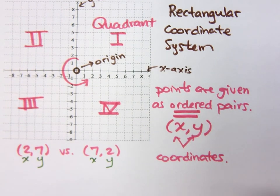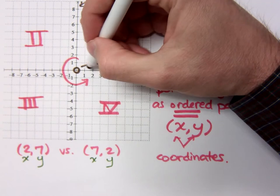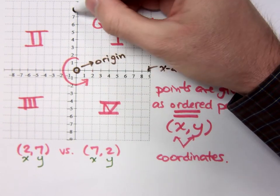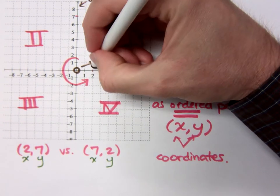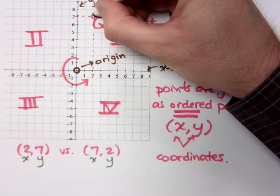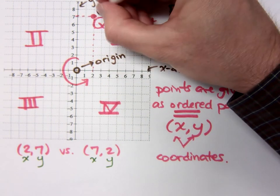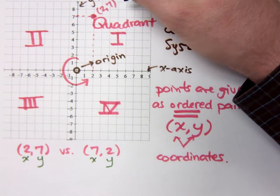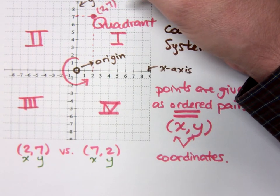The ordered pair 2, 7 means the following. It means that you have an X value of 2 and a Y value of 7. So where these guys meet is right here. So this ordered pair, this point, is for the ordered pair 2, 7.